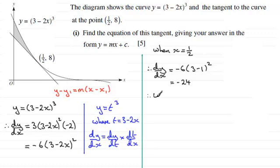So now we're in a position to get the equation of the tangent. So therefore, equation of tangent is: it's going to be y minus y1. Y1 is 8. Equals m, the gradient, which we've just seen as minus 24, multiplied by x minus x1. And x1 is one half.